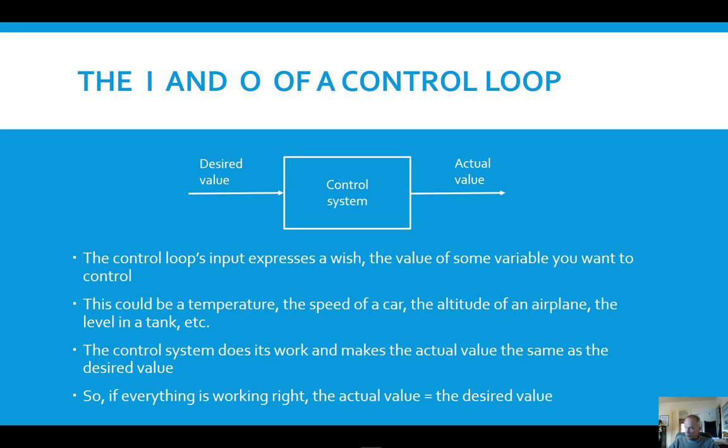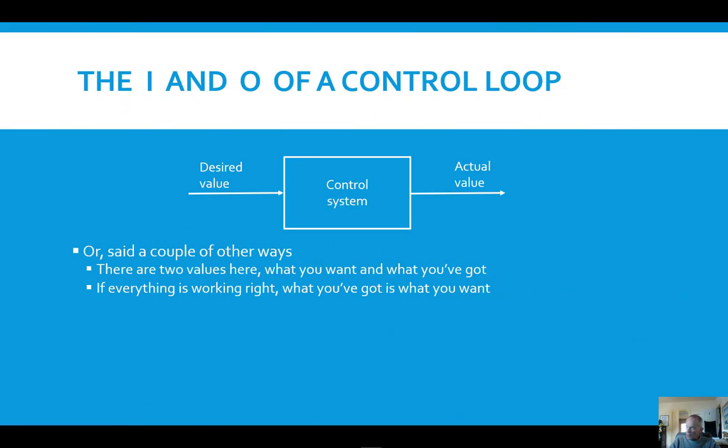The control system's job is to make the actual value equal to the desired value and to hold it at that level under varying conditions of load. So if everything works right, the actual value equals the desired value. There's other ways to express this also. I like to bring it down to earth where you have these two values - the input and output - and the input is what you want and the output is what you got. So if everything is working right, what you've got is what you want.